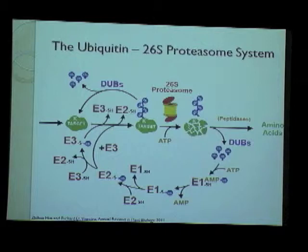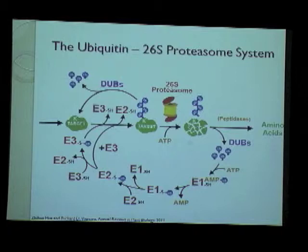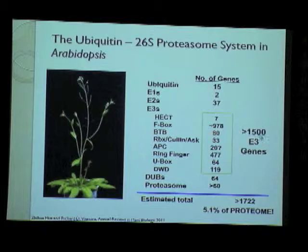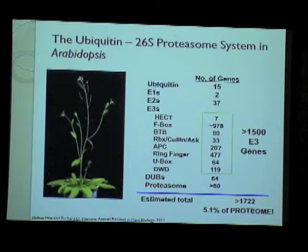Once a polyubiquitin chain is formed on a target that the cell needs to degrade, the cell can either remove that ubiquitin chain using deubiquitinating enzymes — in which case the protein will not be degraded — or it can send the target to the 26S proteasome, which degrades it and releases ubiquitin, regenerated into single ubiquitin molecules by deubiquitinating enzymes. E3 ligase genes are the most numerous in the ubiquitin 26S proteasome system and account for nearly 5% of the entire Arabidopsis proteome, reflecting how critical this pathway is for selective protein degradation.